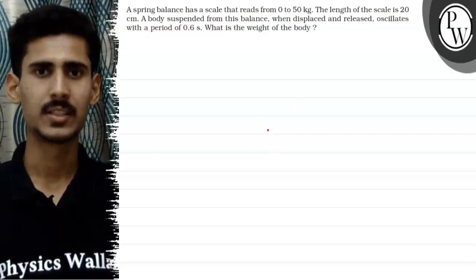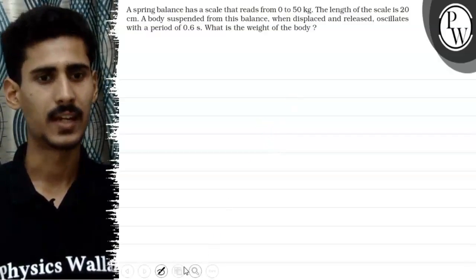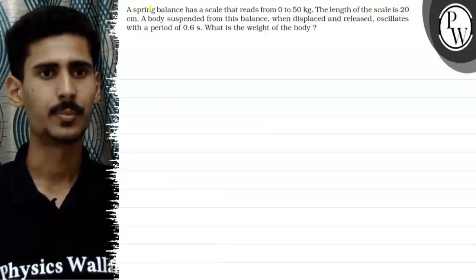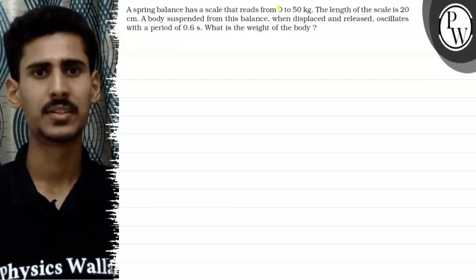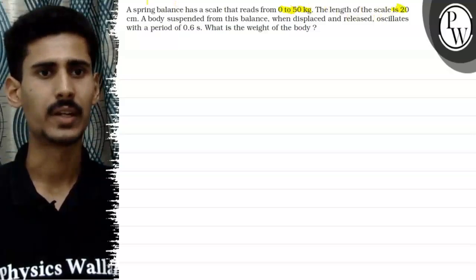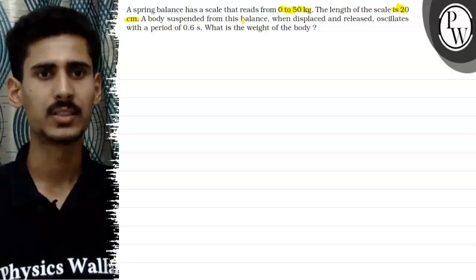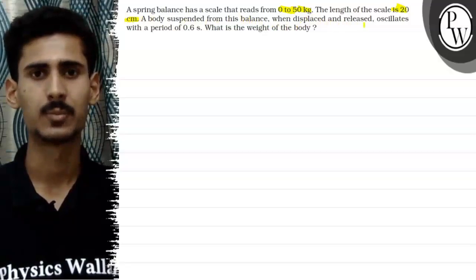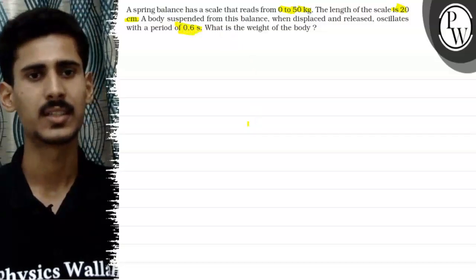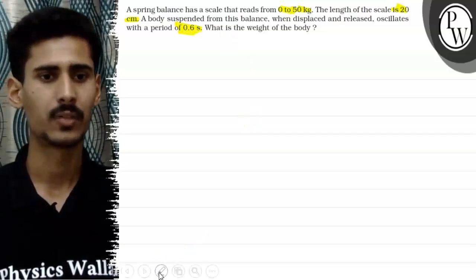Hello, let's see this question. The question says that a spring balance has a scale that reads from 0 to 50 kg. The length of the scale is 20 centimeter. A body suspended from this balance when displaced and released oscillates with a time period of 0.6 seconds. So what is the weight of the body?